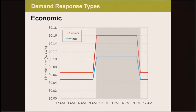What are some types of demand response? The first is economic. It's when building owners and operators recognize that they can save money by reducing power during times when the cost of power is high. Utilities encourage customers to reduce demand during peak periods by charging more for electricity during those times. Peak periods are typically late morning and early afternoon on summer days, but can be morning and evenings on cold days in colder climates with significant electric heating.